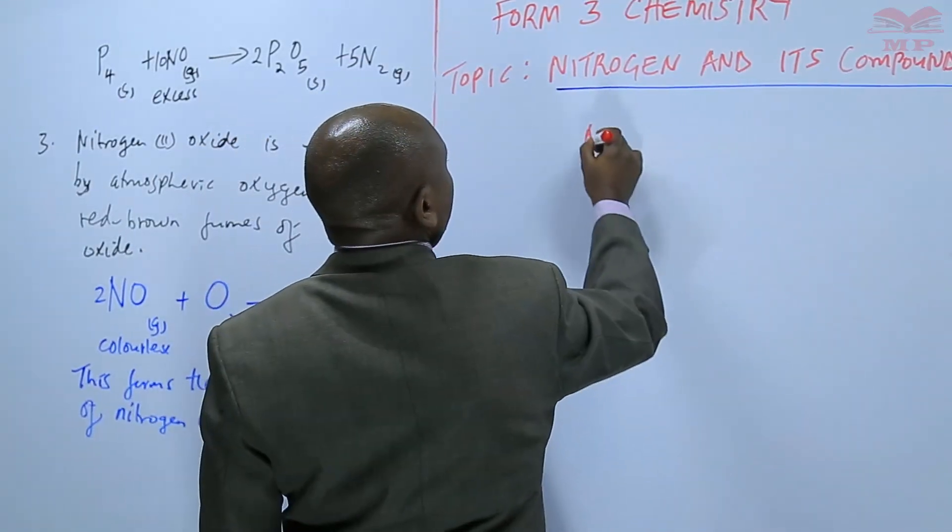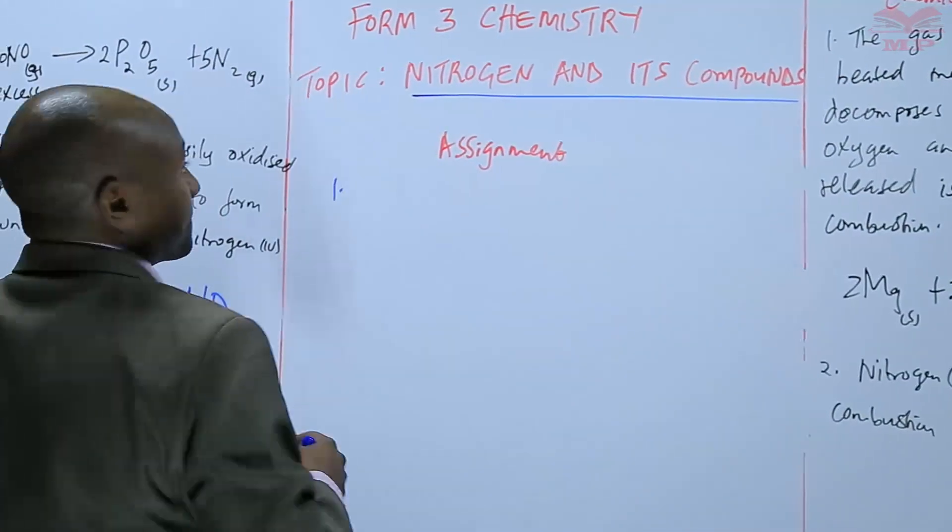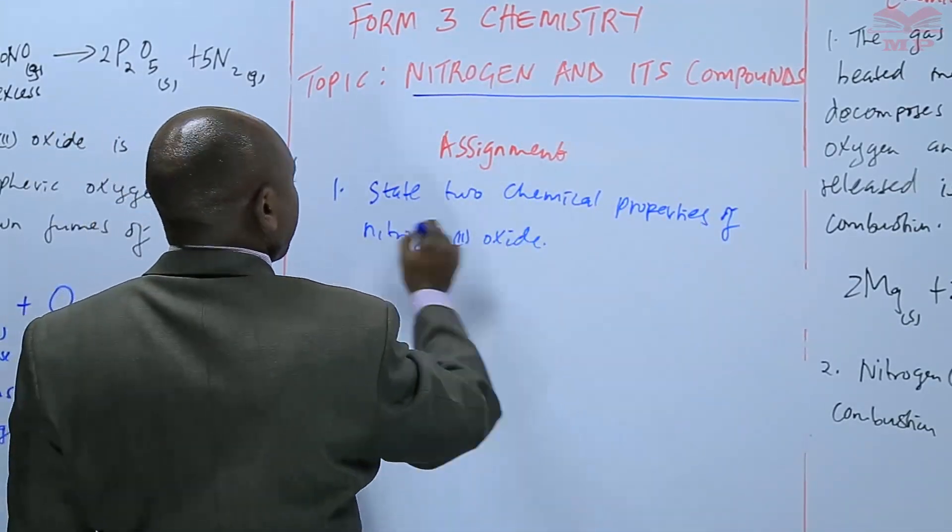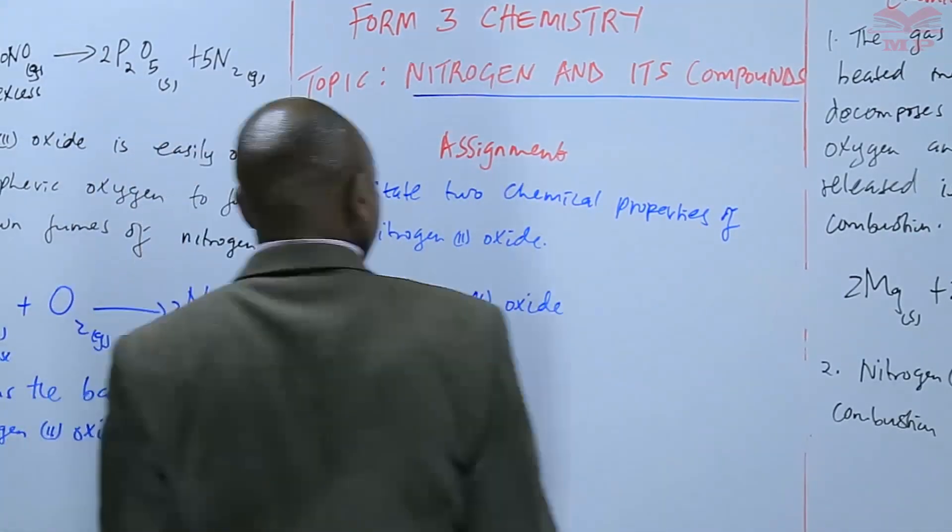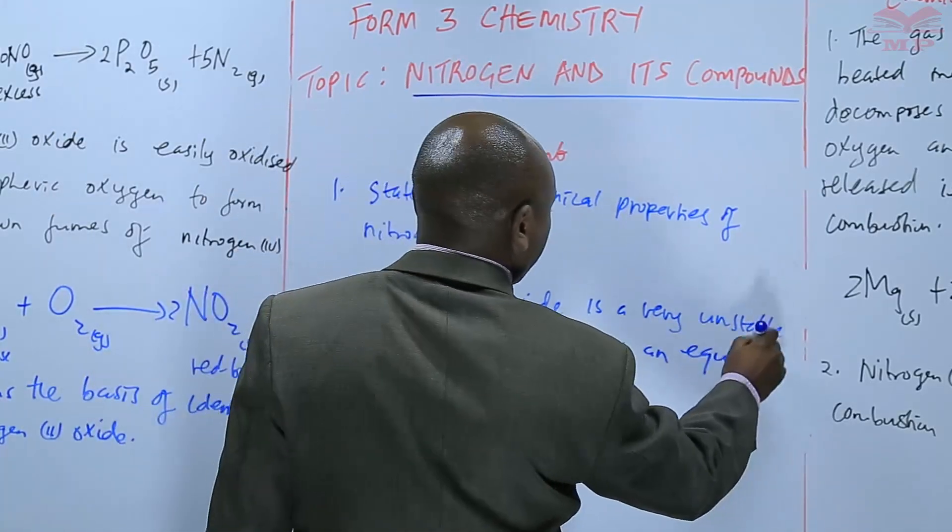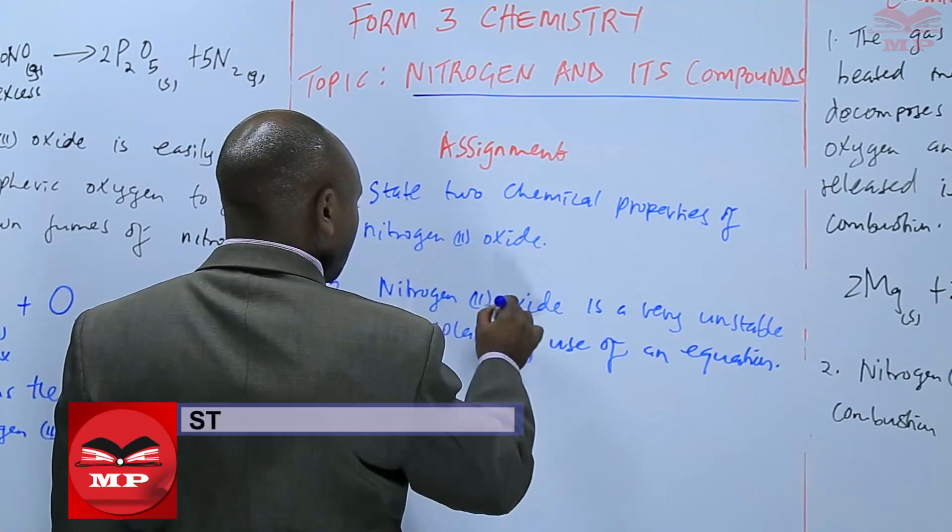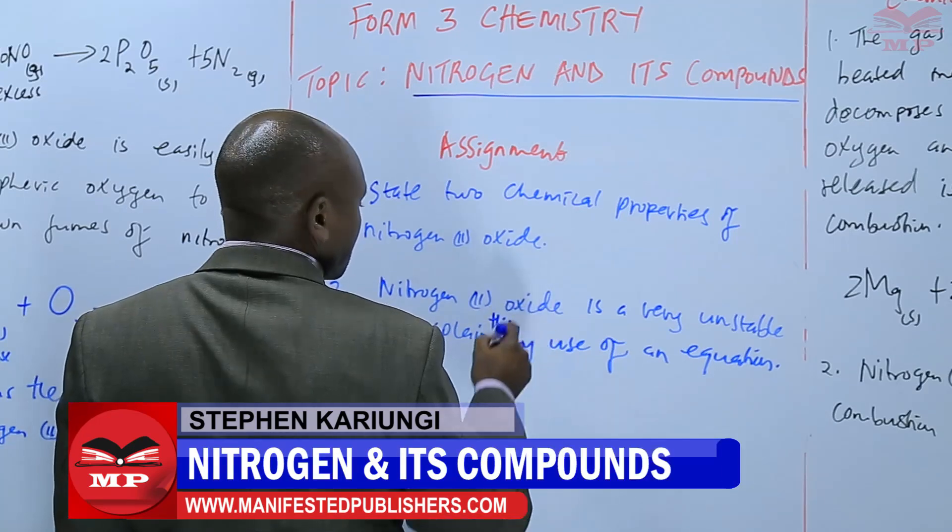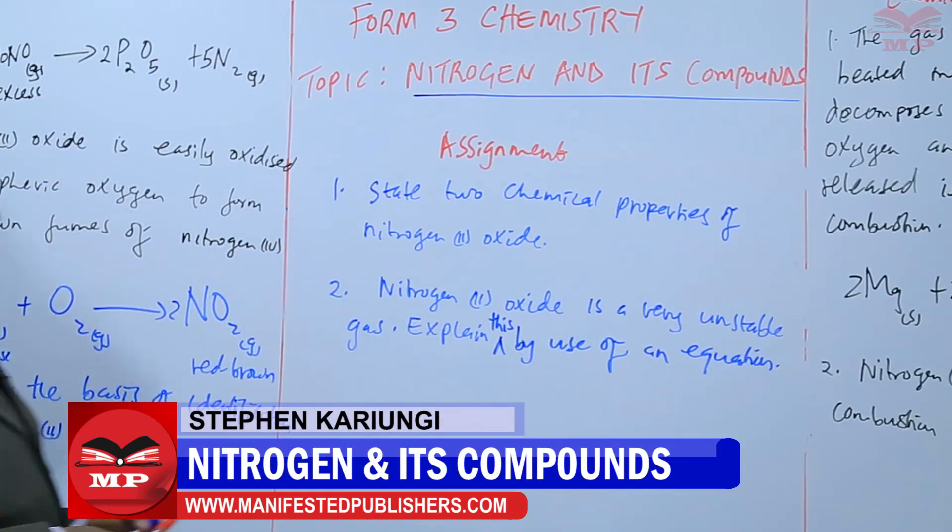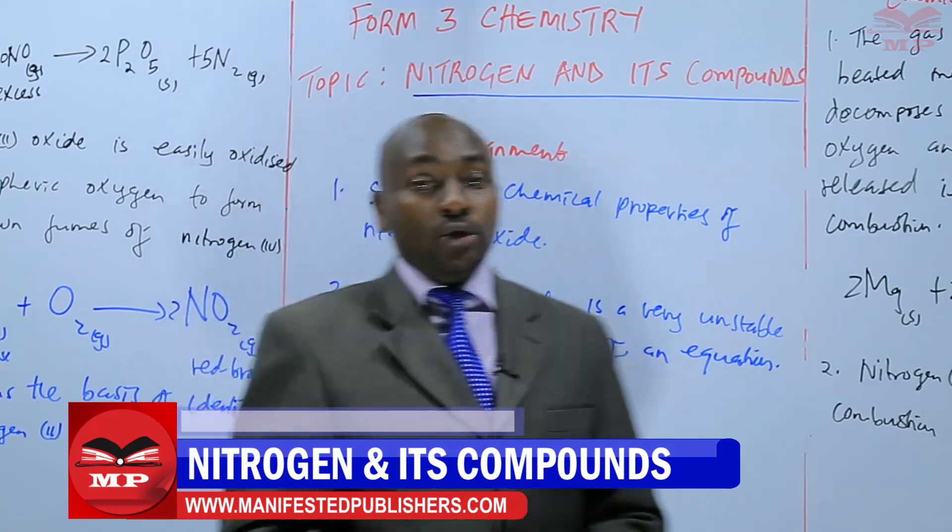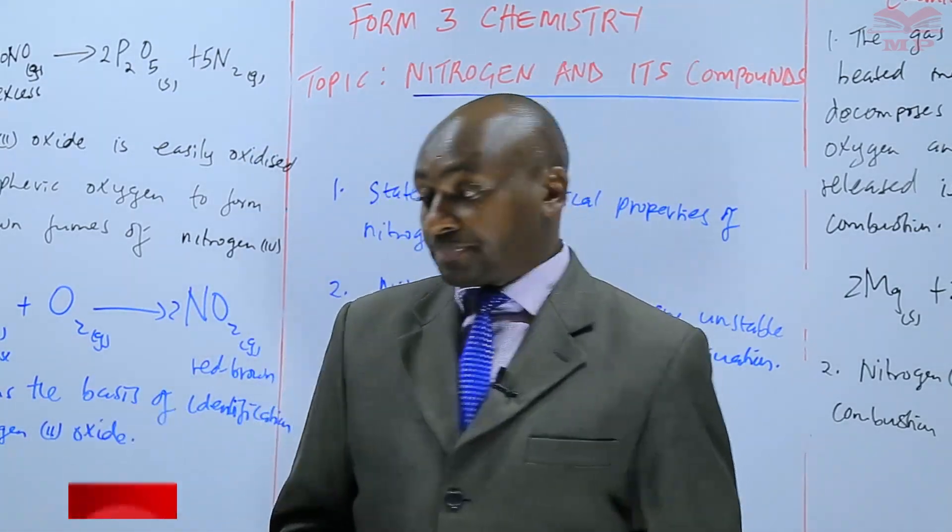Our assignments: First question: state 2 chemical properties of nitrogen 2 oxide. Number 2: nitrogen 2 oxide is a very unstable gas, explain this by use of an equation. We are going to stop there until next time. Goodbye.